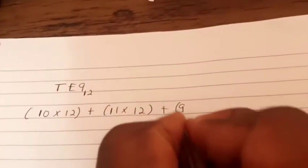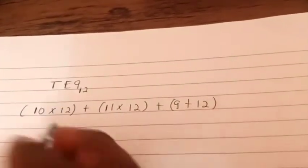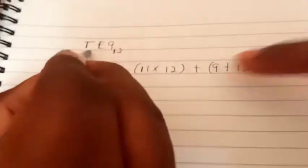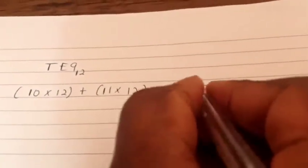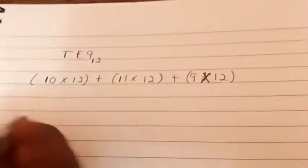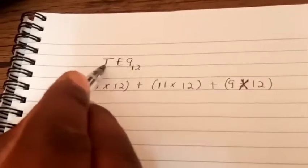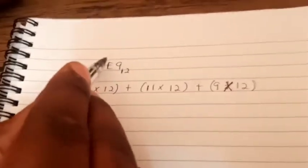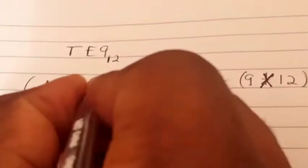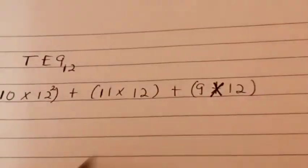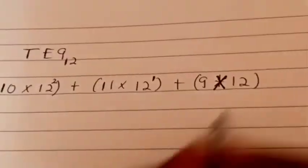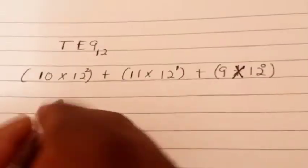11 times 12 to some power, plus 9 times 12 to some power. Now we have three digits here, so the highest exponent is 3 minus 1, which is 2. So we put 2, then 1, and 0. The power 2 is 144.